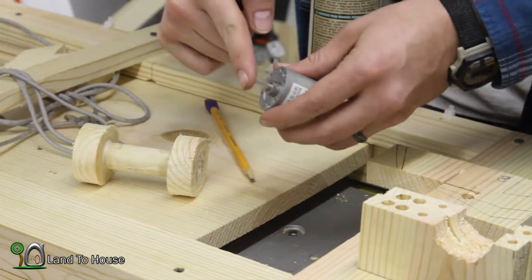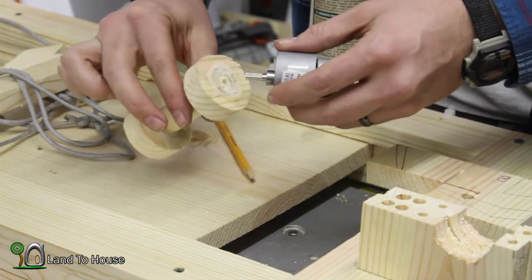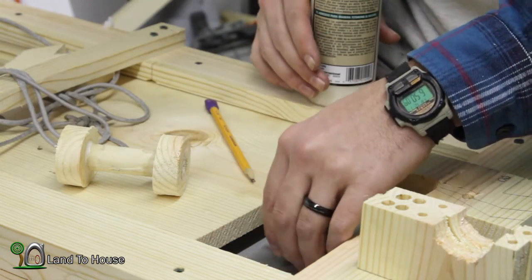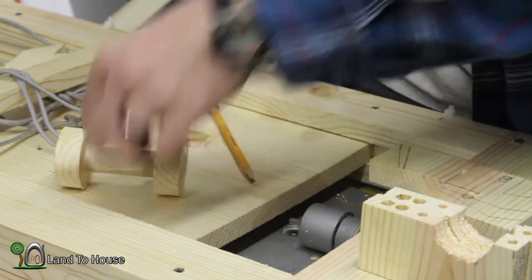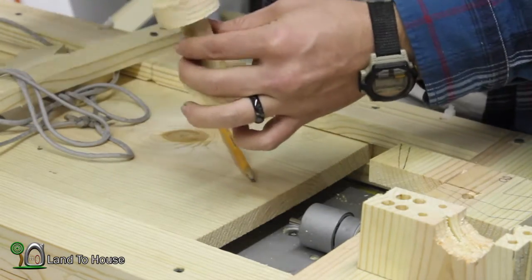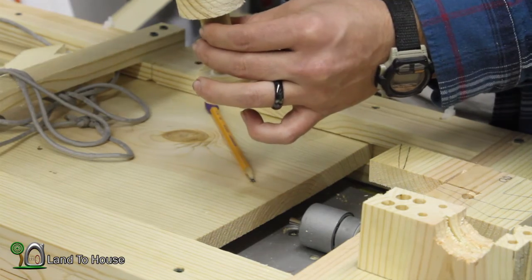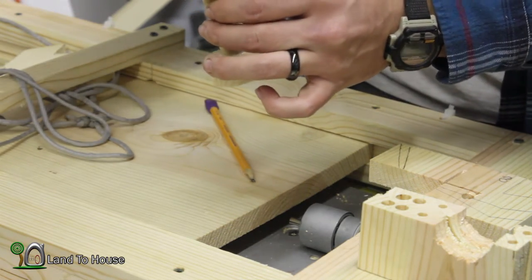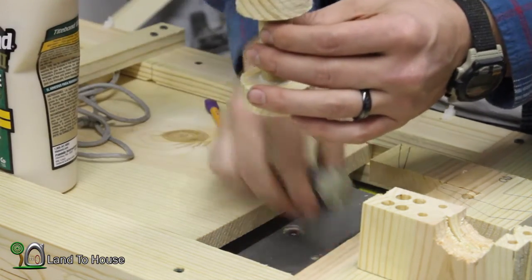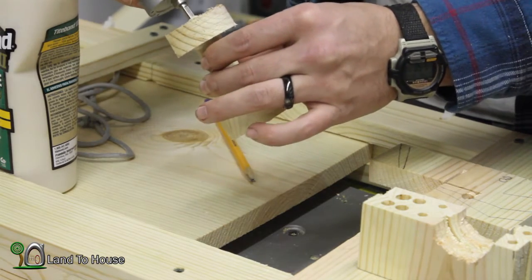Now it's time to get the shaft of the motor glued into our spool. So I'm going to dab some glue in here, and then just push this shaft into this spot here. And that glue will hopefully get this thing locked down pretty tight.